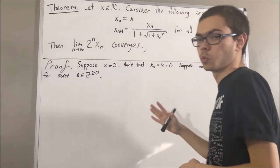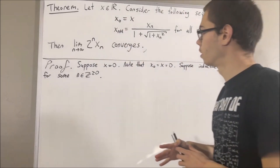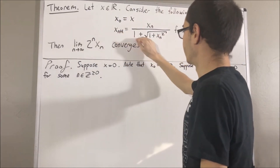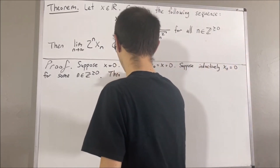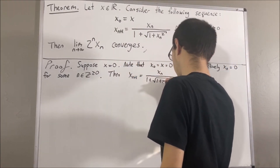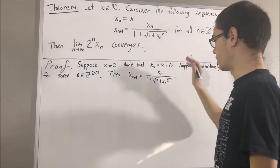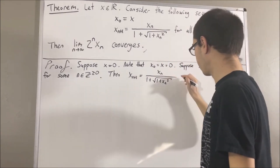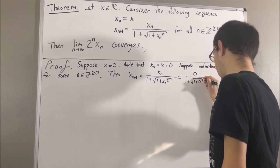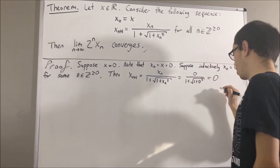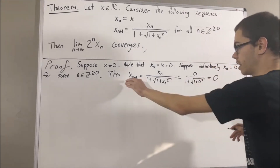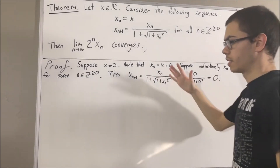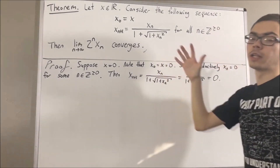We want to show that xn+1 is equal to 0. By definition, xn+1 is just going to be equal to this expression. Since we're assuming xn is 0, we can replace xn with 0, and clearly this is just equal to 0. So xn+1 is equal to 0. By induction, we have established that xn is equal to 0 for all n.